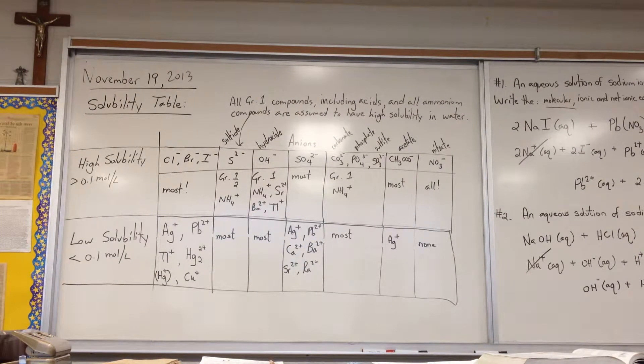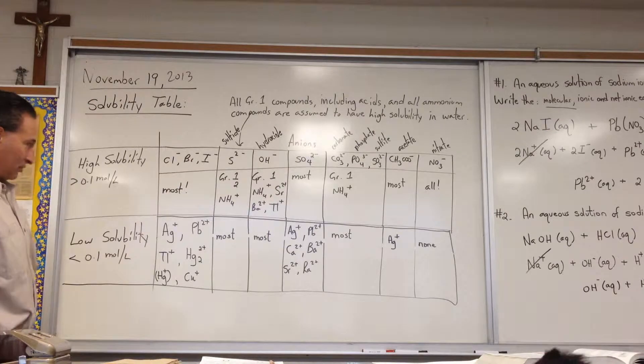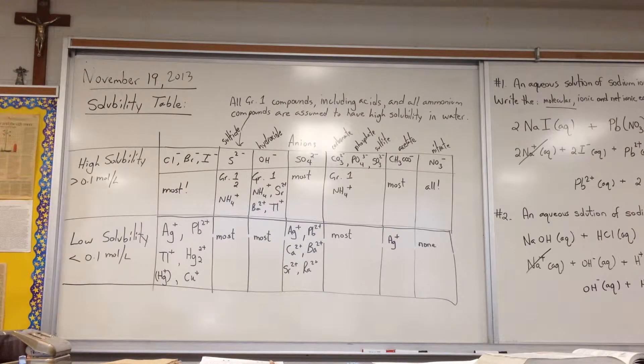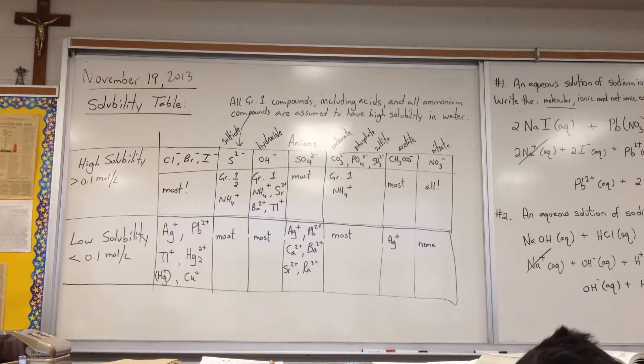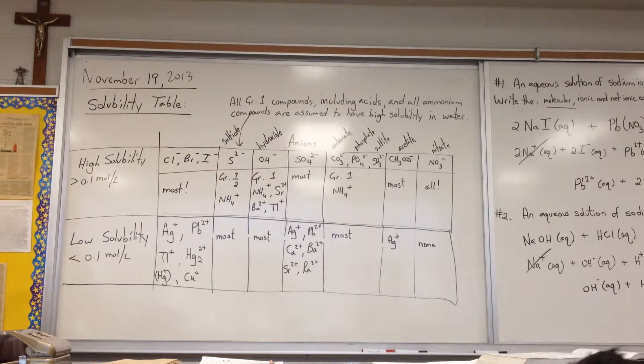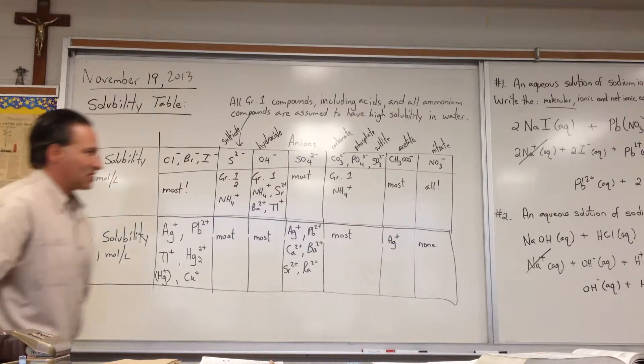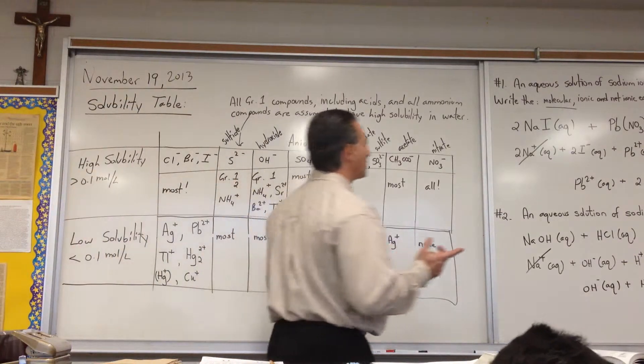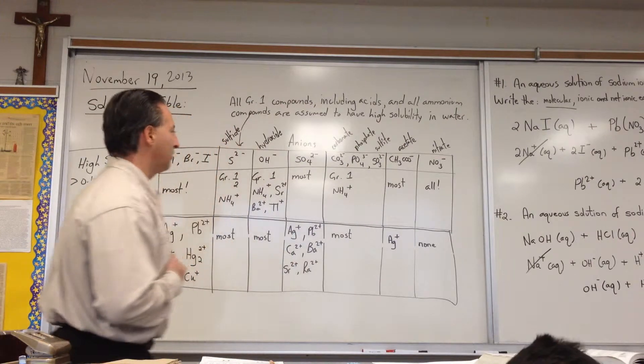Okay, so we're looking at a solubility table. This is going to help encapsulate what we need to memorize when we mix salts together and to predict if we're going to get a reaction. How do you know if you're going to get a reaction? You're going to get a precipitate. If you have something solid appearing in the products, then you know that you have had a reaction.